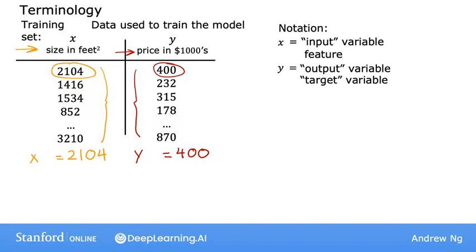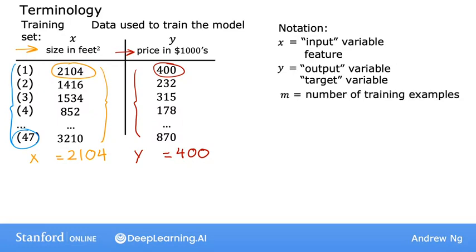The dataset has one row for each house, and in this particular training set, there are 47 rows with each row representing a different training example. We're going to use lowercase m to refer to the total number of training examples. So here, m equals 47.